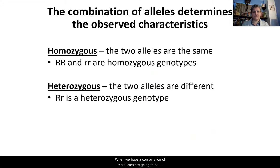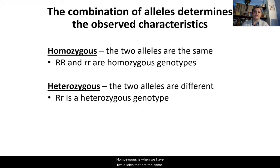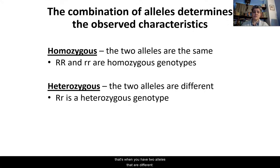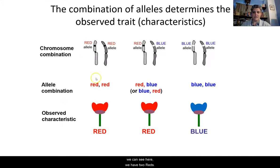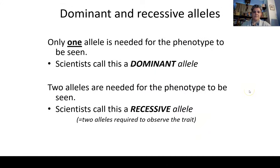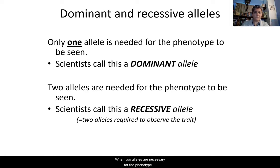When we have a combination of alleles, they're going to be either homozygous or heterozygous. Homozygous is when we have two alleles that are the same — that's going to be two reds or two blues. When you have a heterozygous genotype, that's when you have two alleles that are different, so a red allele and a blue allele. We can see two reds — homozygous; two blues — homozygous; and the one in the middle is a red and a blue, so that is heterozygous. When you see only one allele necessary for the phenotype to be observed, scientists call this a dominant allele. When two alleles are necessary, that's a recessive allele.